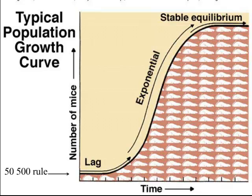Every population grows in the same way — they show a standard population growth curve. Populations of mice initially don't grow very fast; their population doesn't increase in size at all for some time — that's the lag period. Then the population grows very quickly — that's the exponential period. Then the population doesn't grow anymore — that's the stable equilibrium period.